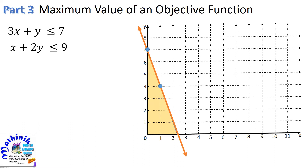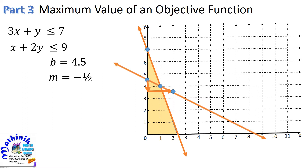The next inequality is x plus 2y is less than or equal to 9. Again, we get the y-intercept by setting x equals 0 and use the slope-intercept form. We get the first point of the second line at (0, 4.5), or (0, 9/2). The slope is negative one-half, so that is 1 unit going down and 2 units going to the right for our second point. Connecting these two points, we have our second line. Using (0, 0) as the test point, we get our solution as the shaded region, including our test point.